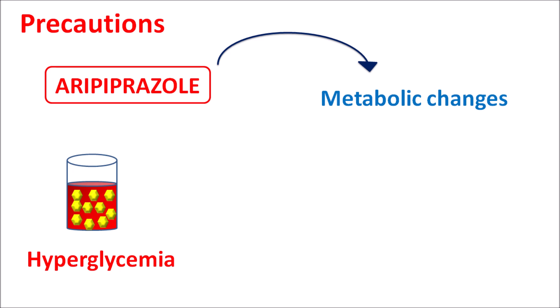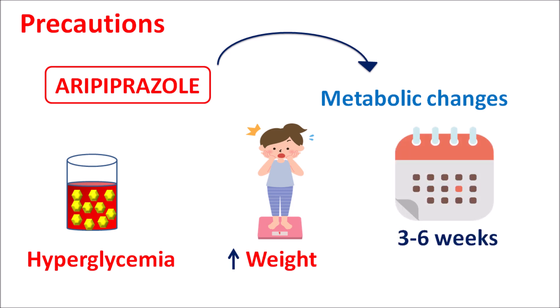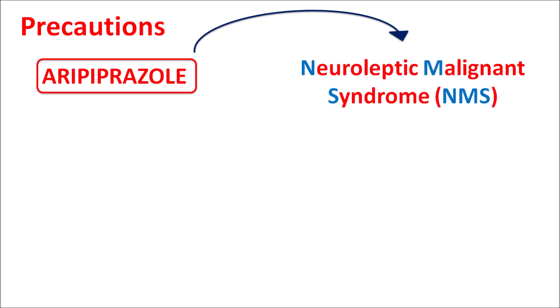In such patients, glucose levels should be closely monitored. Similarly, this drug can also produce some disturbance in lipid levels, and it can increase weight resulting in weight gain. These metabolic changes can be observed within three to six weeks of treatment. After three weeks, any increase in glucose levels, lipid levels, and unexpected weight gain should be closely monitored with the use of aripiprazole.